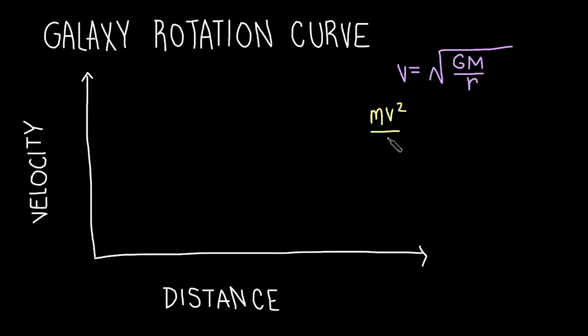mv squared over r, the centripetal force, is equal to the gravitational force GMm over r squared, where m represents mass and r represents distance.